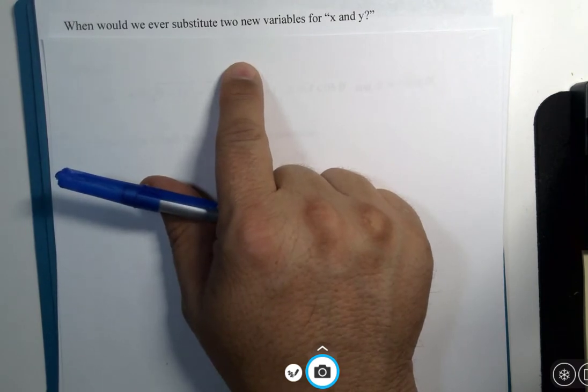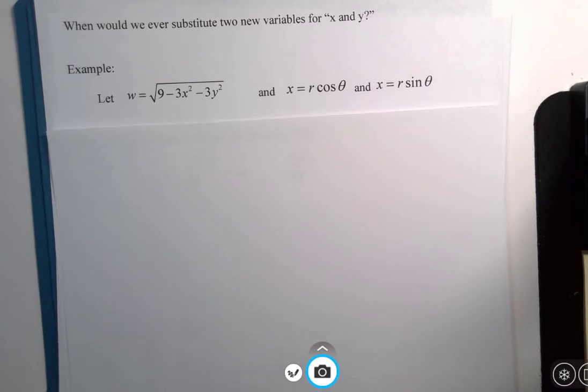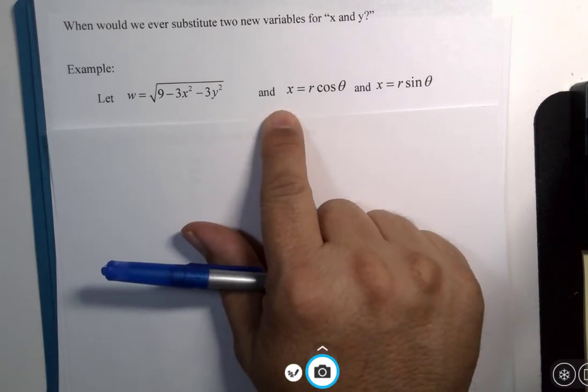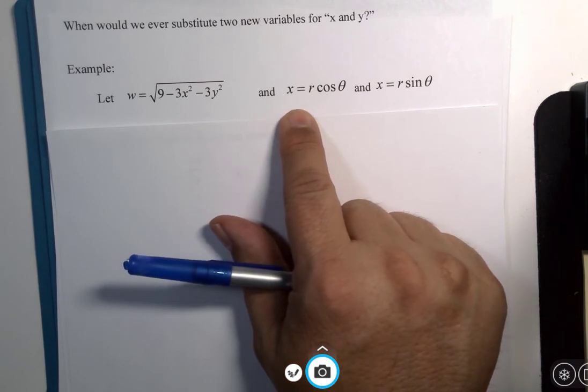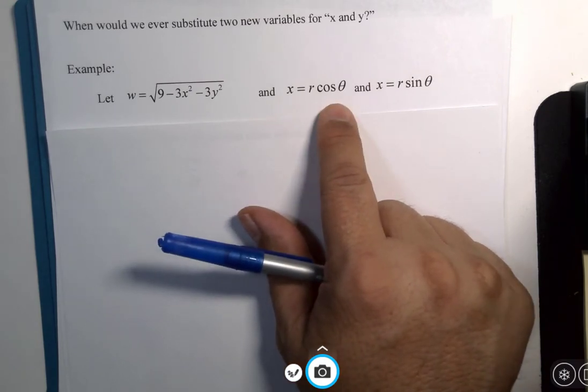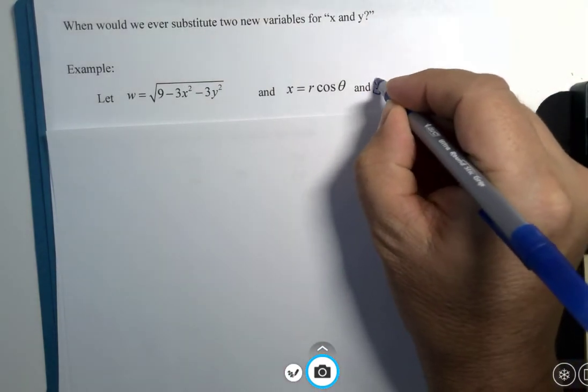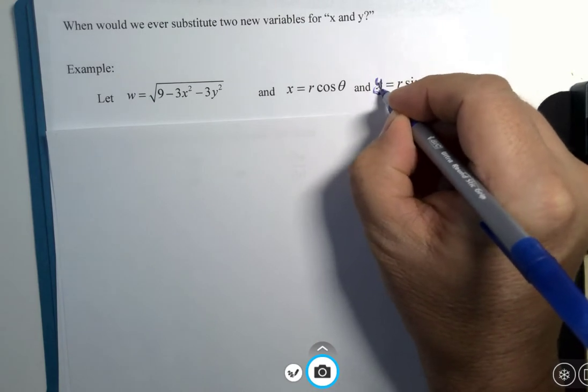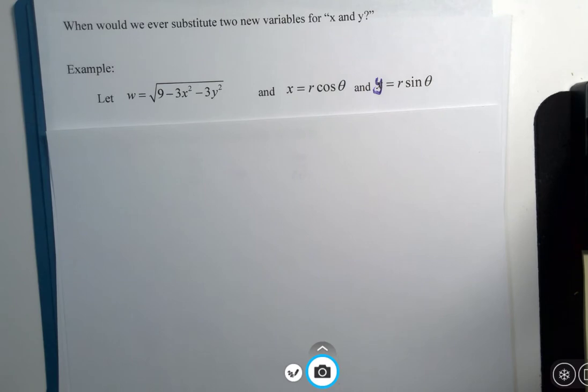So when would we ever substitute two new variables for x and y? Well, how about this case? How about x and y get converted to polar? And every x becomes r times cosine of theta. And there's a typo there. I'm still human. y is equal to r sine theta.